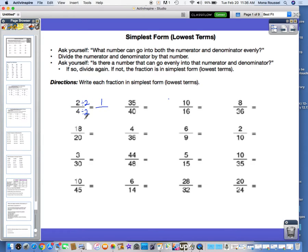2 divided by 2 is 1, 4 divided by 2 is 2. Then we ask ourselves, is there a number that can go evenly into this numerator and denominator? Since nothing but 1 could go into both 1 and 2, we would say our answer is in simplest form.